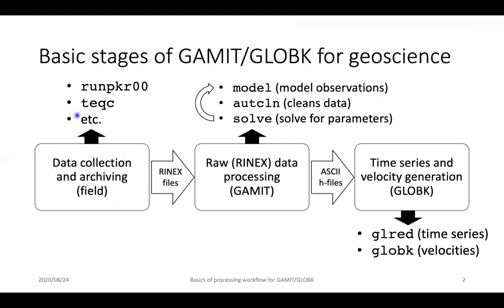The basic stages for most geoscience use are: data collected or archived in a public archive needs to be converted to RINEX files — the Receiver Independent Exchange Format — which is the basic input format expected by GAMIT. If you have your own raw data, you may use programs such as RMPK/R00 (a Trimble program) or TEQC, provided by UNAVCO to translate, edit, and quality-check data. We won't cover those here; we expect you to be able to create or download RINEX files.